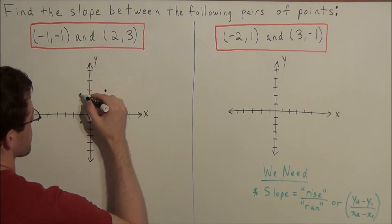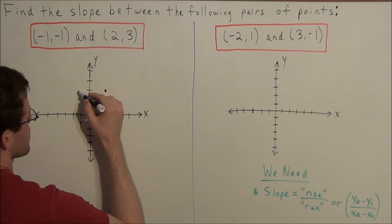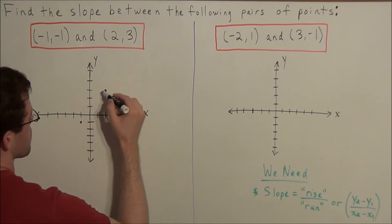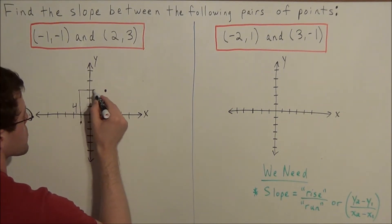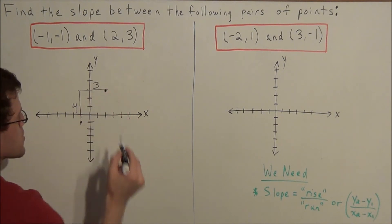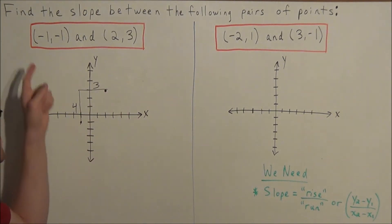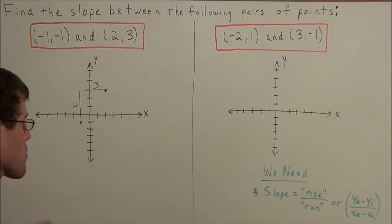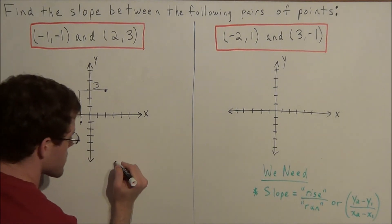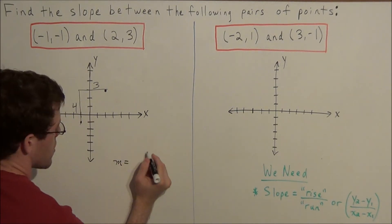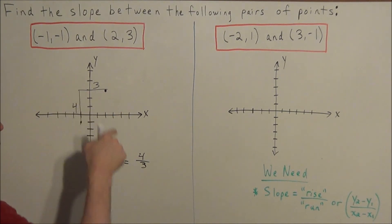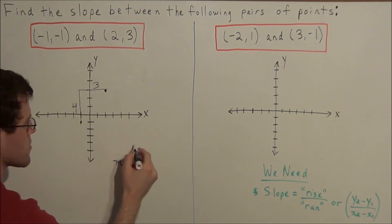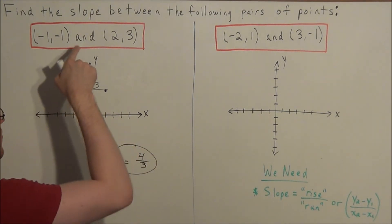So we're rising four, and we're going to run one, two, three. Altogether, we've risen four and ran three. This tells us that the slope between the point negative one, negative one and two, three is m equals four over three. We're comparing the rise to the run, so this would be our answer to the first problem.